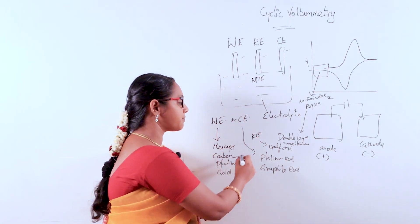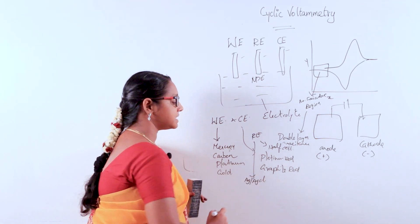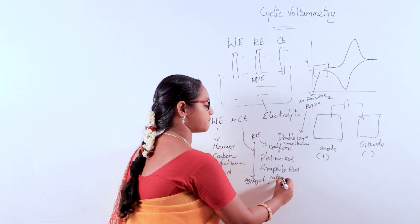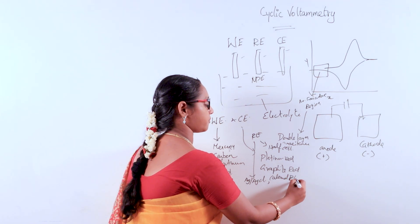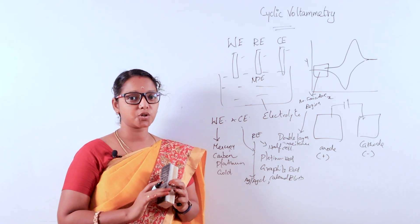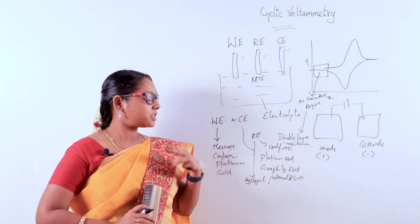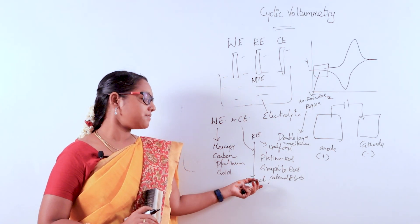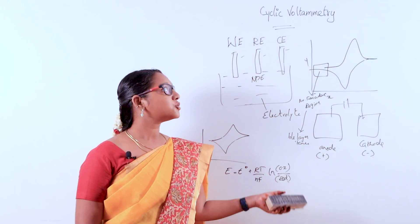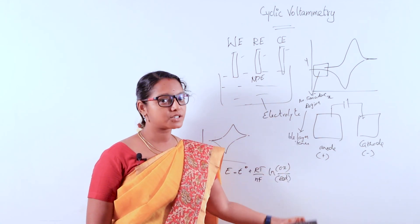For the reference electrode, we can use silver/silver chloride (Ag/AgCl) or a calomel electrode. Technically, a standard hydrogen electrode can be used, but it cannot be used at normal room temperature, so it is replaced by the silver/silver chloride electrode or the calomel electrode. These are the basic concepts of cyclic voltammetry.